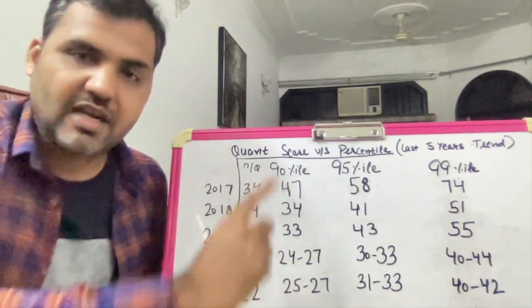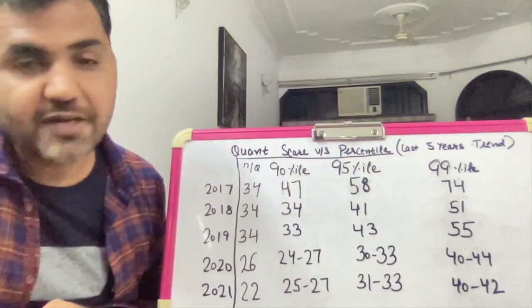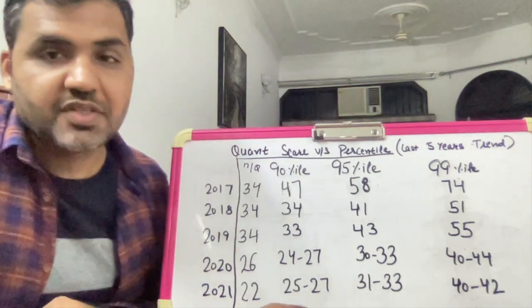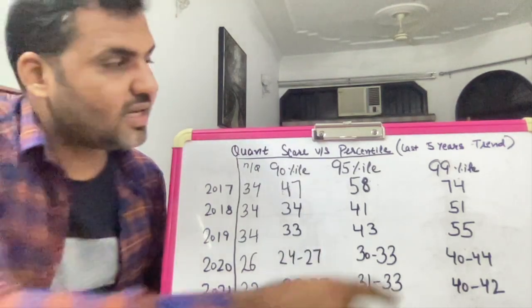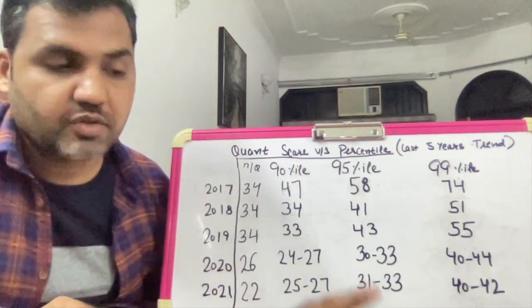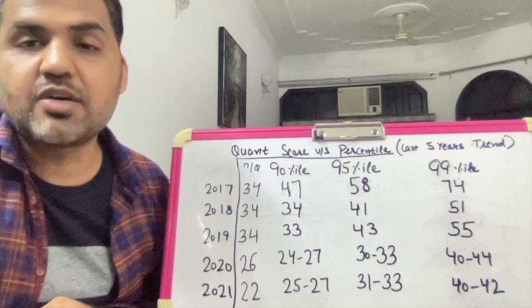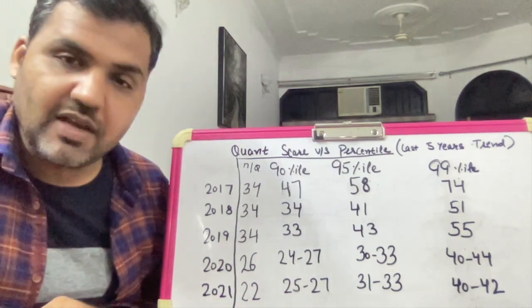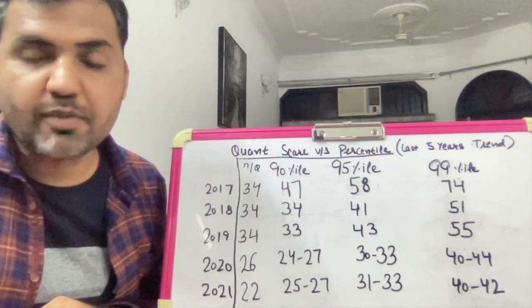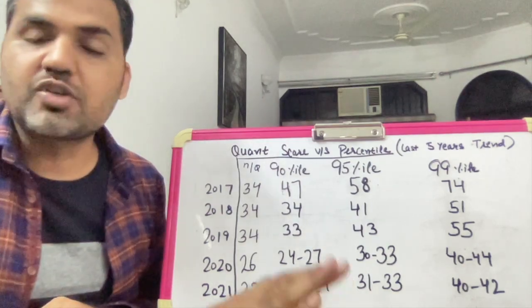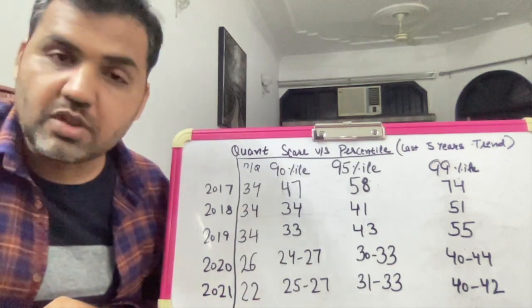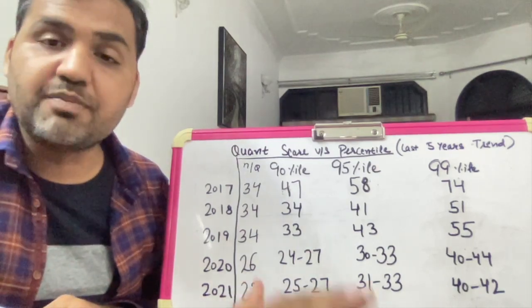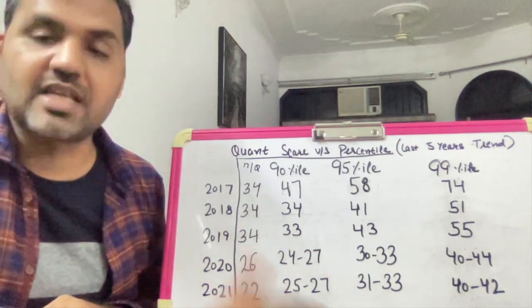We are going to talk about three percentiles: 90th, 95th, and 99th. Concentrate on the third column — the 99th percentile. In 2017, the 99th percentile is obtained at a score of 74. At 3 marks per question, that's approximately 25 questions out of 34. That's approximately 75% of the paper. So in 2017, to get 99th percentile in quant, you had to get 75% of the paper correct.